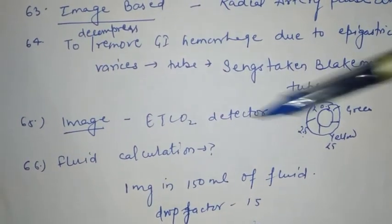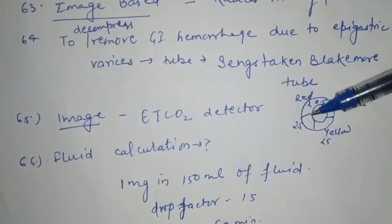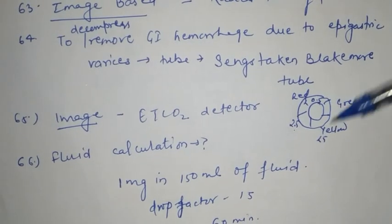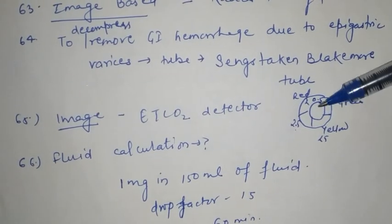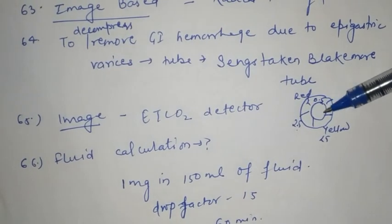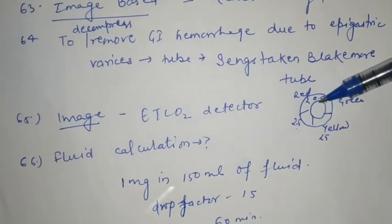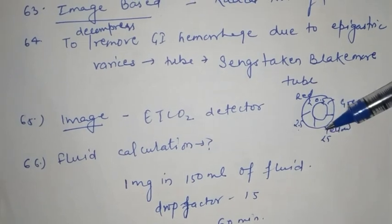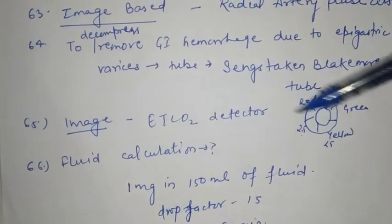Next question: to decompress or remove GI hemorrhage due to esophageal varices, the tube that is used is the Sengstaken-Blakemore tube.